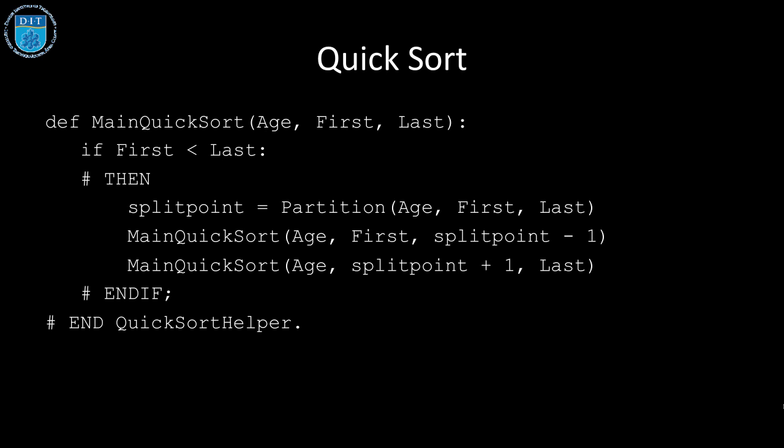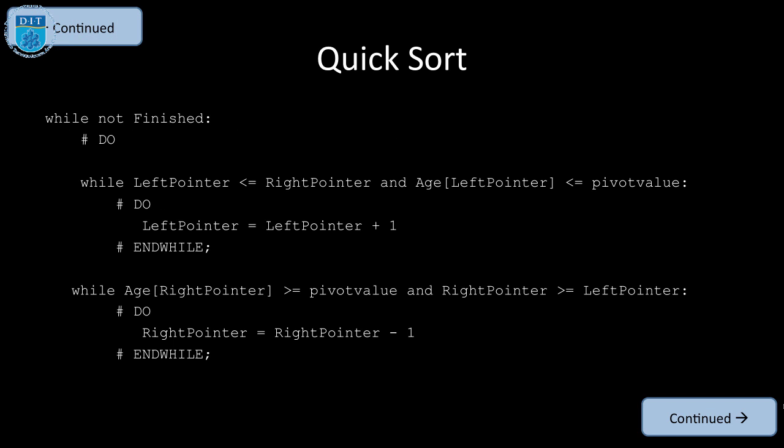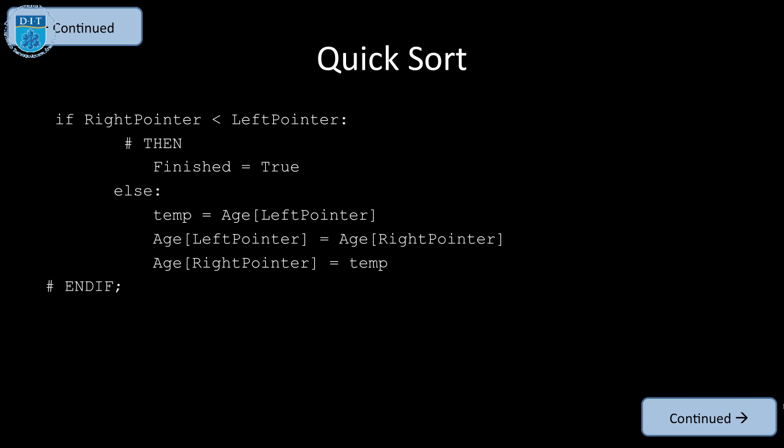Our partition code is really the interesting code. Our partition says select the first element as the pivot, then have a left pointer and a right pointer, and keep going until we find a value that's bigger than the pivot on the left and smaller than the pivot on the right. When we do that, we swap them around, and I've shown the swap there in detail.